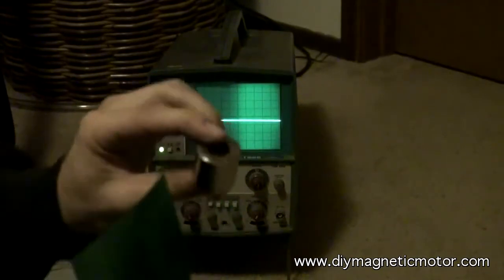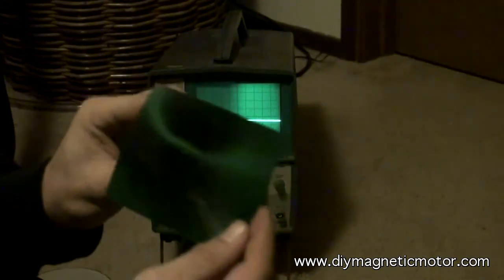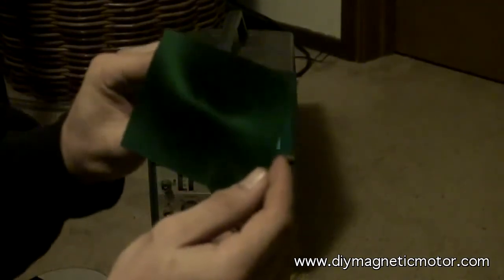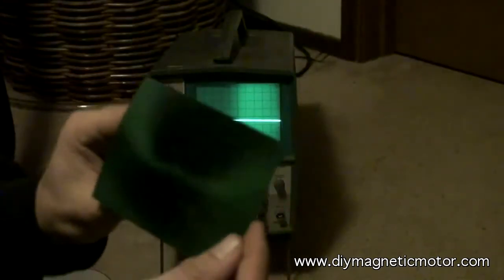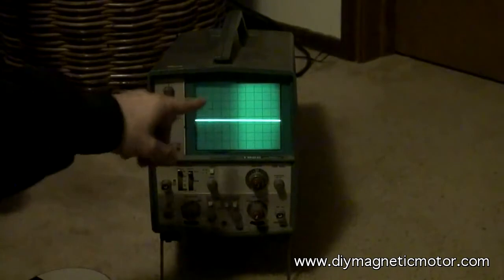This is a magnetic viewing film. This is a neodymium magnet. This is looking at a magnetic waveform, and this is looking at an electric waveform.